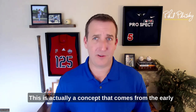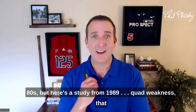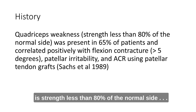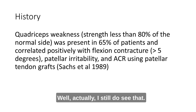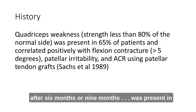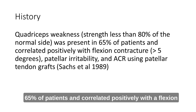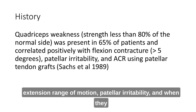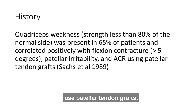This is actually a concept that comes from the early eighties. Here's a study from 1989: quad weakness — strength less than 80% of the normal side — was present in 65% of patients and correlated positively with a flexion contracture, or greater than five degrees of lacking knee extension range of motion, as well as patellar irritability and when patellar tendon grafts were used.